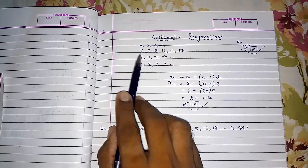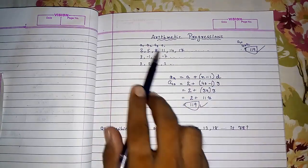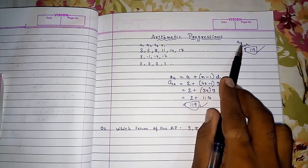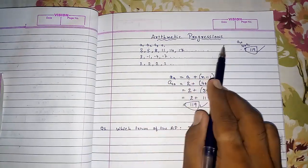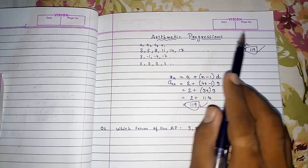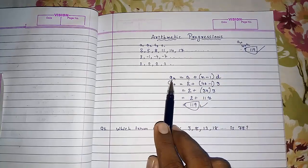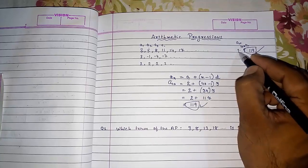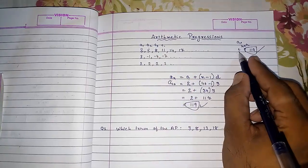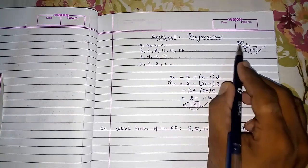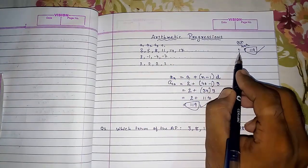Understand, so this is AP. You will get the first number. A means the first number. D means the difference. N means the number, means the order or the list of the number 1, 2, 3, 4. That will be N. Generally students are getting confused in N and AN. AN means that number itself. And N means this. Don't get confused in AN and N.